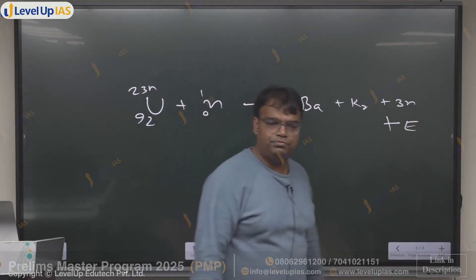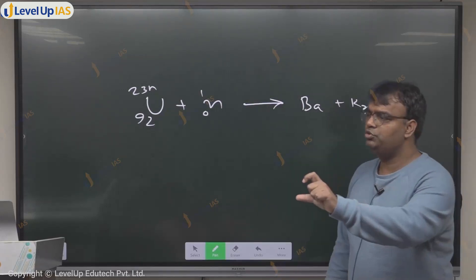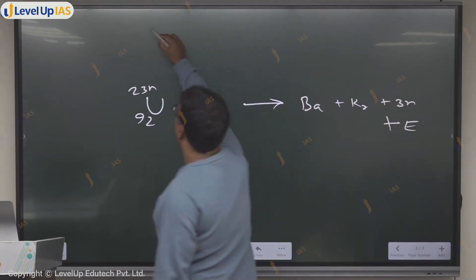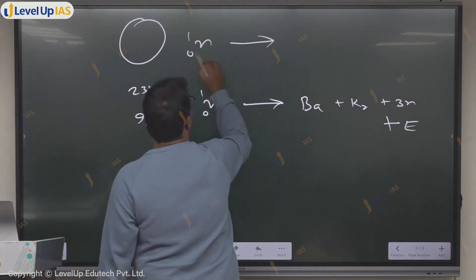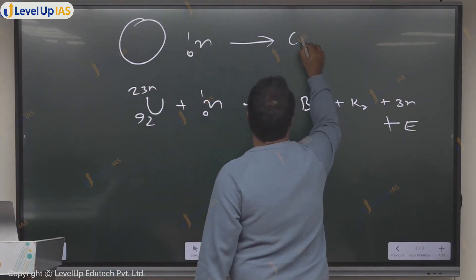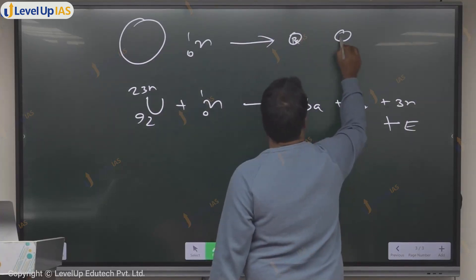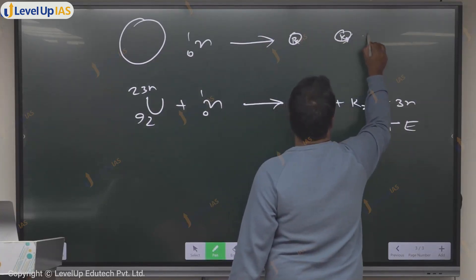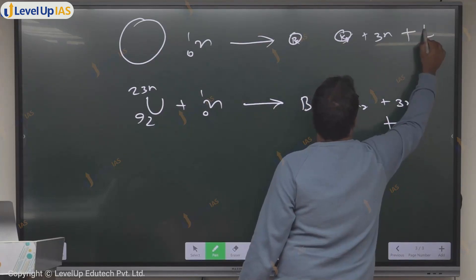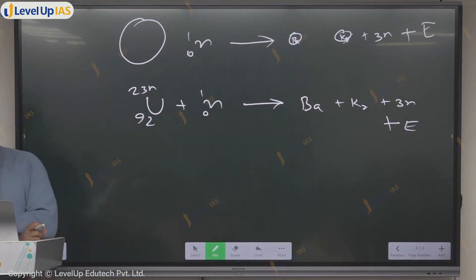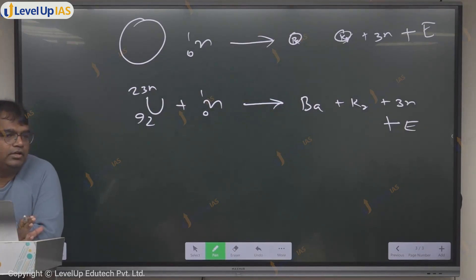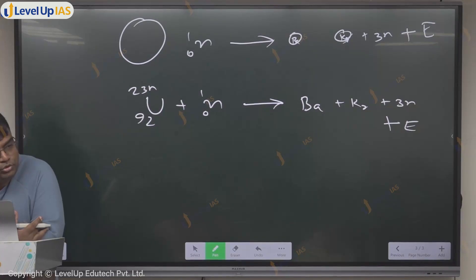This can be achieved at room temperature. You have Uranium-235, bombard it with a neutron, and this big nucleus becomes smaller — two smaller nuclei, barium and krypton, plus three neutrons plus energy. The mass lost is getting converted into energy. This is our fission reaction, and nuclear energy produced on Earth right now is produced by this reaction.